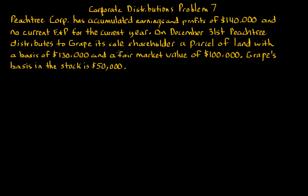So this is problem number seven. Peachtree Corporation has accumulated earnings and profits of $140,000 and no current E&P for the current year. On December 31st, Peachtree distributes to Grape, its sole shareholder, a parcel of land with a basis of $130,000 and a fair market value of $100,000. Grape's basis in the Peachtree Corporation stock is $50,000.